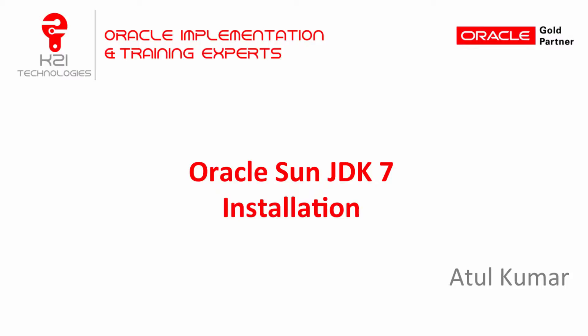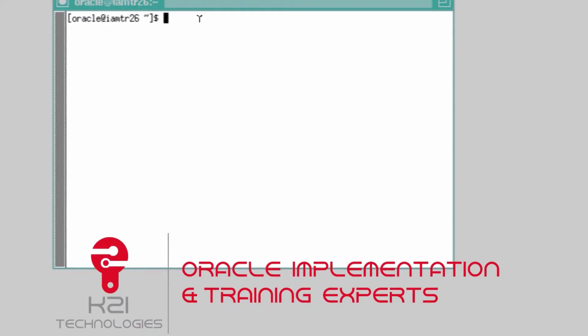When you get an email, you will get access to the VNC server details with a server name and port number or screen number. In this case, the server name is imtr26.k21technologies.com and the screen number is 26. You log in through VNC and land on a screen.